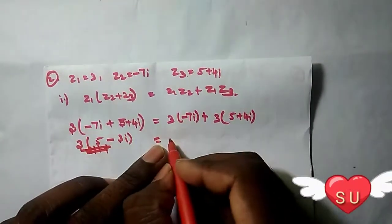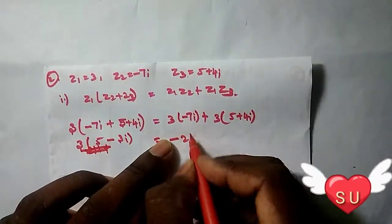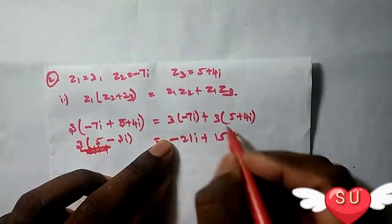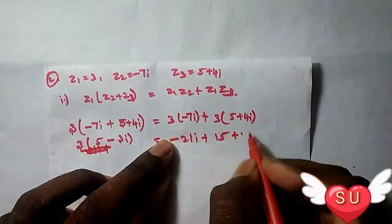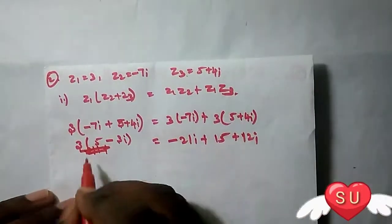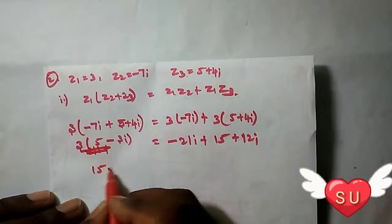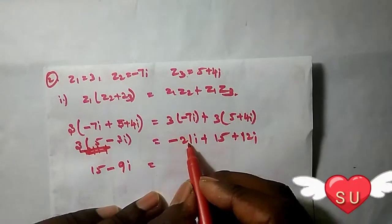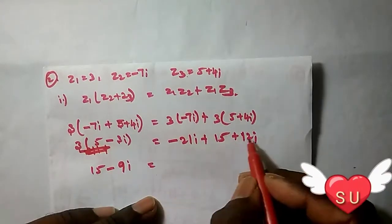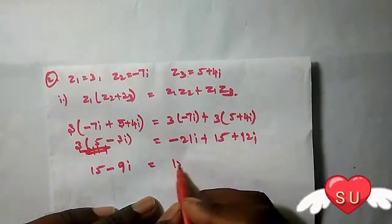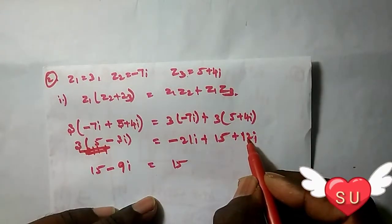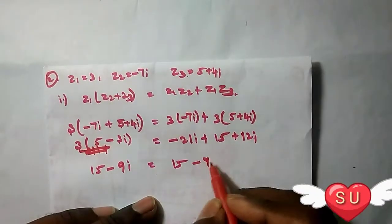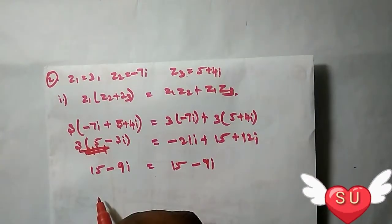So counting it up: minus 21i plus 3 times 15 is 15 plus 3 times 12i. So 15 minus 21i plus 12i, so minus 9i. So here 21 minus 12 gives minus 9i.